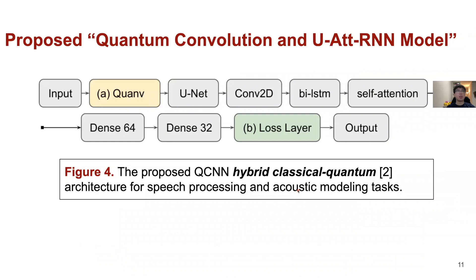Here is our architecture. First, we have an input acoustic feature that is fed into a convolution layer — a randomized convolution by quantum convolution. Then we feed it into the unit because it can do scale-free representation learning. Finally, we have a 2D convolution, RNN, self-attention, and eventually the loss layer and prediction. We believe and find that this architecture is good for acoustic modeling tasks.